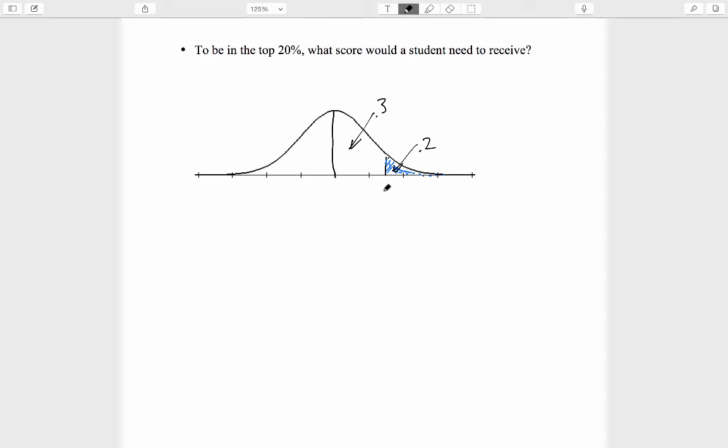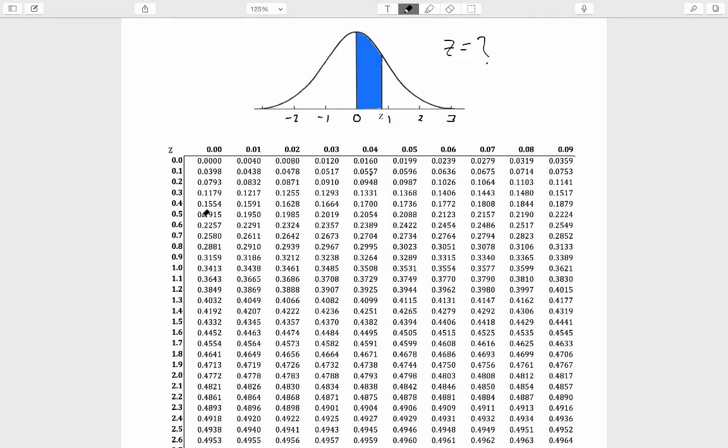To find what that cut-off is, we want to know what z-score results in a probability of 0.3. What does z need to be, such that when we look up that z in the table, the entry inside the table equals 0.3, or as close as we can find in the table to 0.3. Our job now is to scan the entries of this table and see the closest value to 0.3.